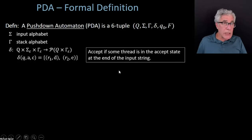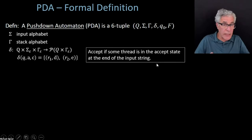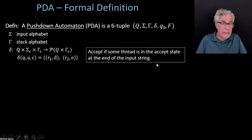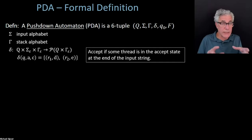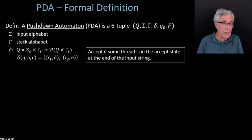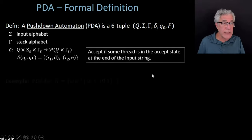It's a non-deterministic machine. We accept as we did before—there might be several different threads of computation. You accept overall if at least one thread ends up in an accept state at the end of the input string. That's how non-determinism works. You can use models of guessing or parallelism, whatever works for you.